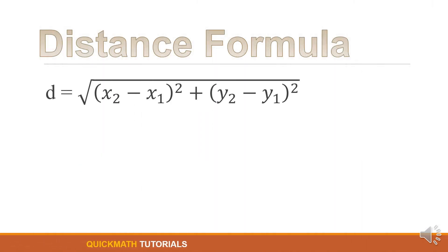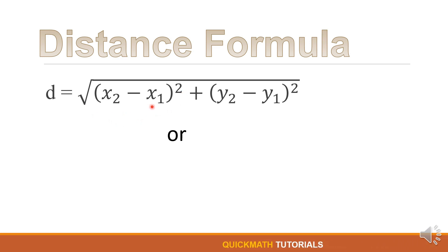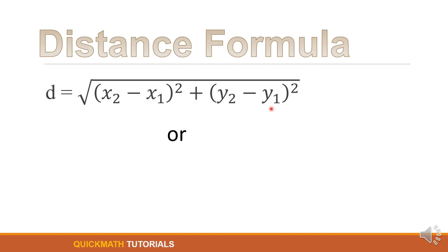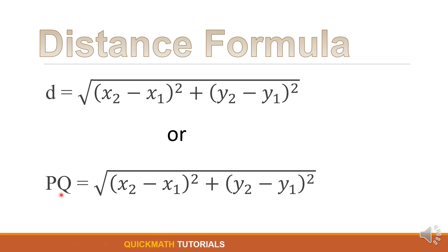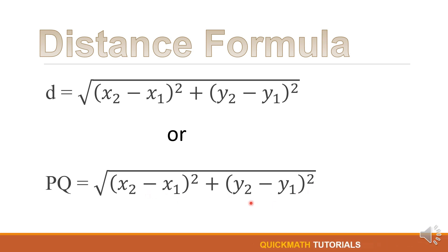This is the formula to get the distance between two points. We have D is equal to the square root of the square of x sub 2 minus x sub 1, plus the square of y sub 2 minus y sub 1. Or if the given points are P and Q, we have PQ is equal to the square root of the square of x sub 2 minus x sub 1, plus the square of y sub 2 minus y sub 1.